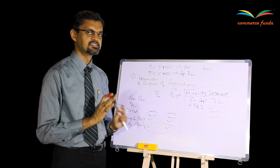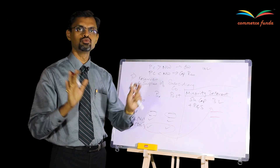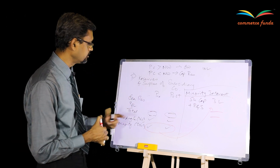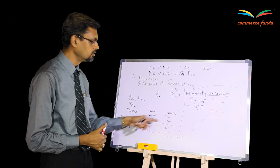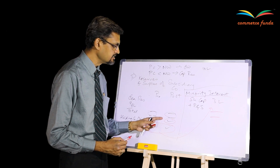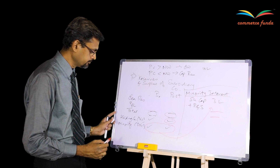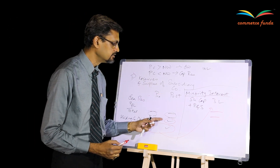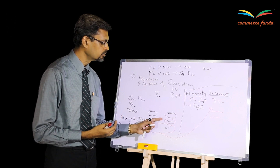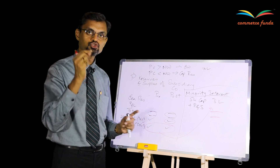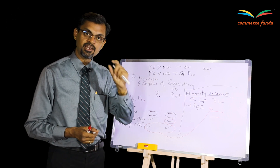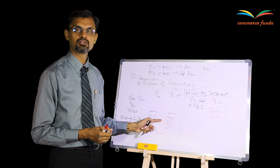Once these three standard working notes are prepared, 80 to 90 percent of your job for the consolidated balance sheet is done. You may wonder: we used the pre-acquisition figure in cost of control and the minority figures in minority interest — what about the post-acquisition figure belonging to the parent company? That is the profit belonging to the parent company after the takeover, which is revenue profit. It will be included in the P&L balance for the subsidiary company in the consolidated balance sheet.